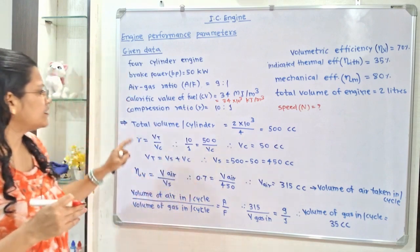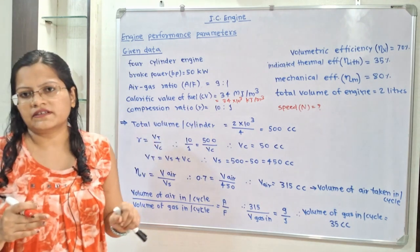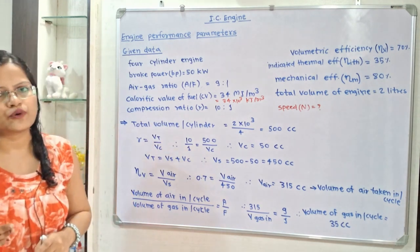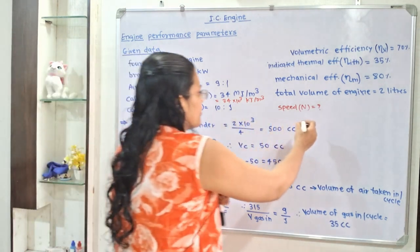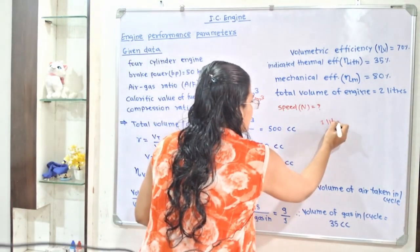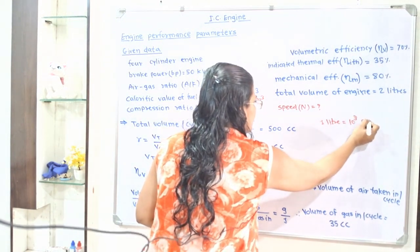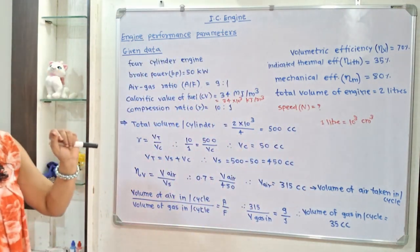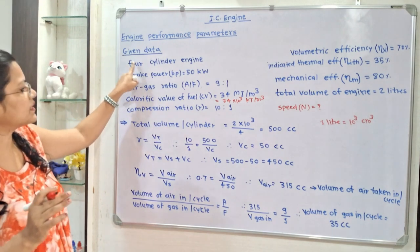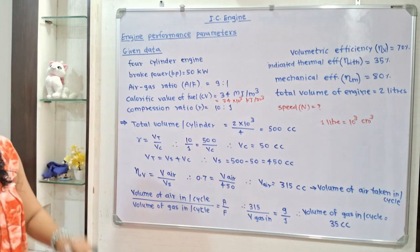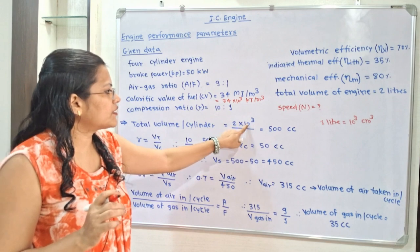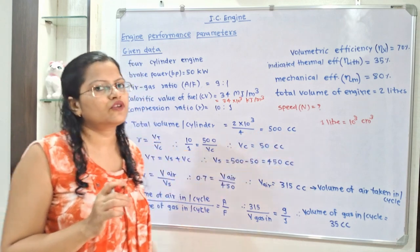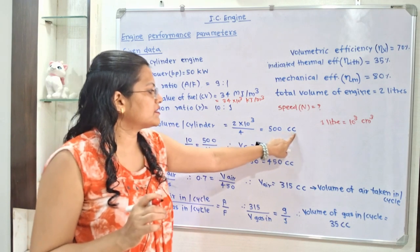The total volume unit is given in liters, so we have to convert it into centimeter cube. The relation is: 1 liter equals 10³ centimeter cube. We need the total volume per cylinder, and since there are 4 cylinders, we divide by 4. So, 2 liters = 2 × 10³ cc ÷ 4 = 500 cc per cylinder.